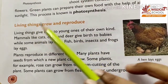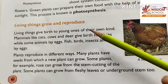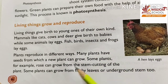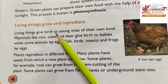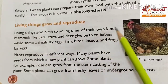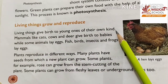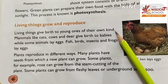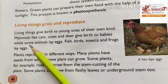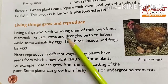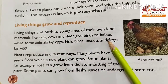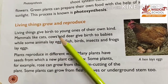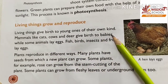Living things grow and reproduce. Living things give birth to young ones of their own kind. Mammals like cats, cows and deer give birth to babies.